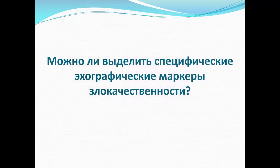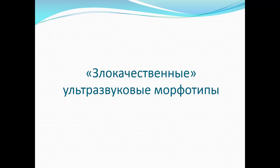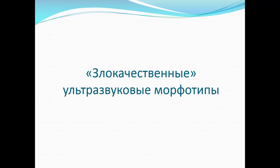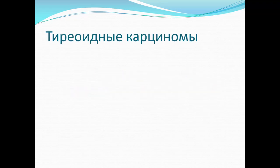Можно ли выделить специфические эхографические маркеры злокачественности? Ответ положительный. Все многообразие узловых образований разбито на определённые группы — морфотипы, конкретно на 8: 4 злокачественных и 4 доброкачественных. Основная идея — визуально запомнить каждый морфотип, чтобы легко дифференцировать злокачественные и доброкачественные ультразвуковые морфотипы.